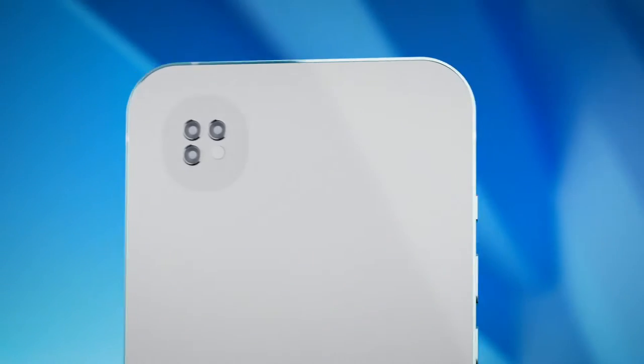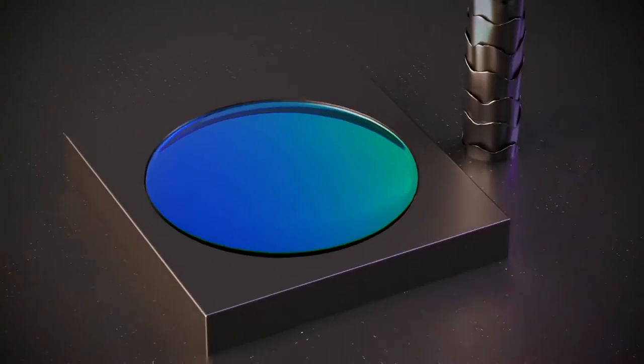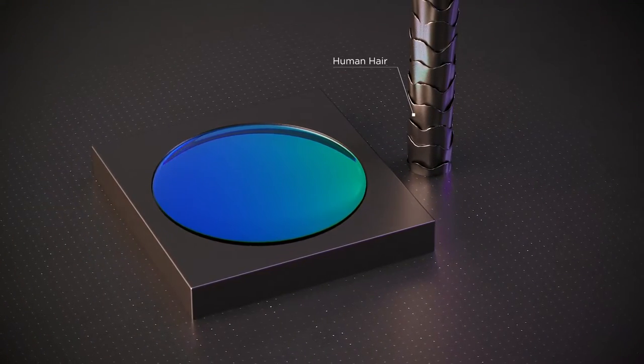What we do at MetaLens is completely different. A MetaLens is a completely flat optic composed of these nanostructures, which are about a thousandth of the width of a human hair. We can combine the functionality of five different lens elements into one single flat layer.